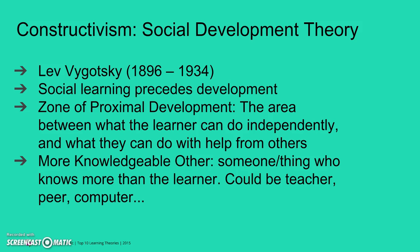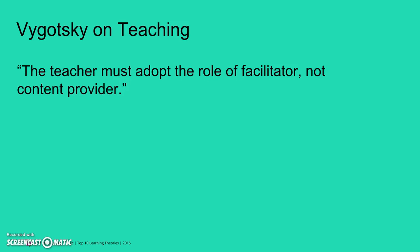Another very famous educational theorist is Lev Vygotsky, whose work was really not known in the West until after his death. But he's really the father of constructivism with his social development theory. He emphasized social learning and felt that it preceded development, which rather differs from Piaget, who is also another constructivist. He came up with two very important concepts: one is the zone of proximal development, which is the area between what the learner can do independently and what they can do with help from others. Those others are known as the more knowledgeable other — someone or something who knows more than the learner, and it might be a teacher or a peer, but it could equally be a computer. Vygotsky on teaching: 'The teacher must adopt the role of facilitator, not content provider.' We've heard that many, many times when we think about education today.